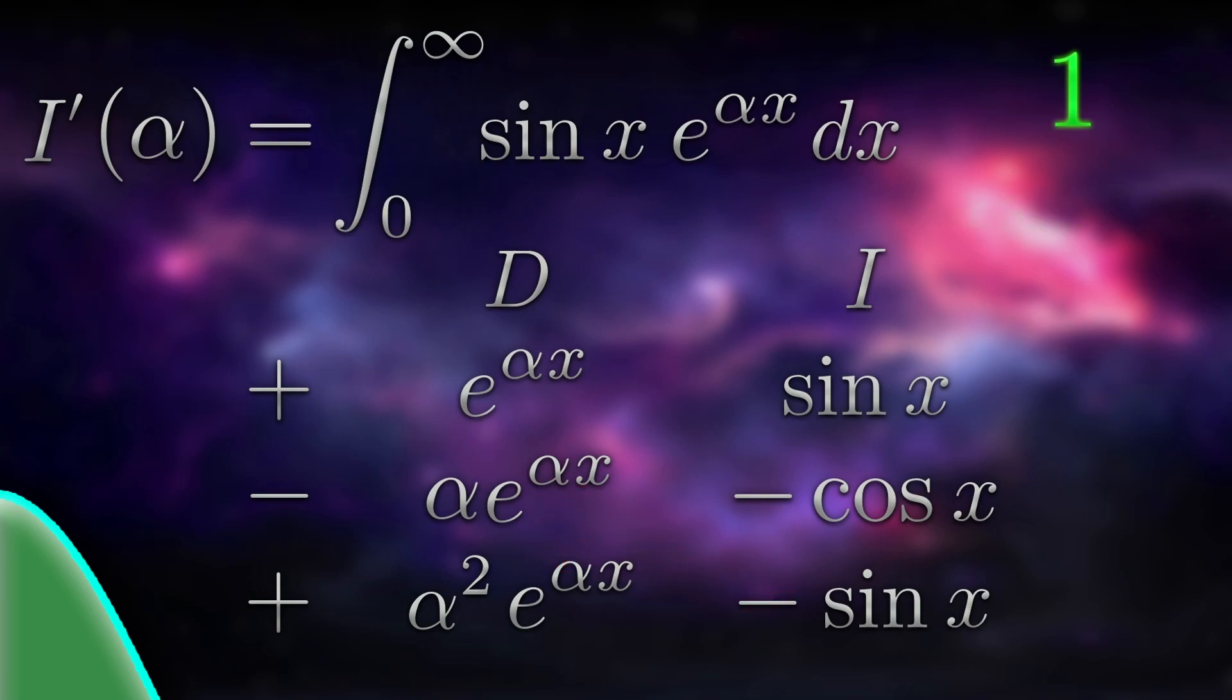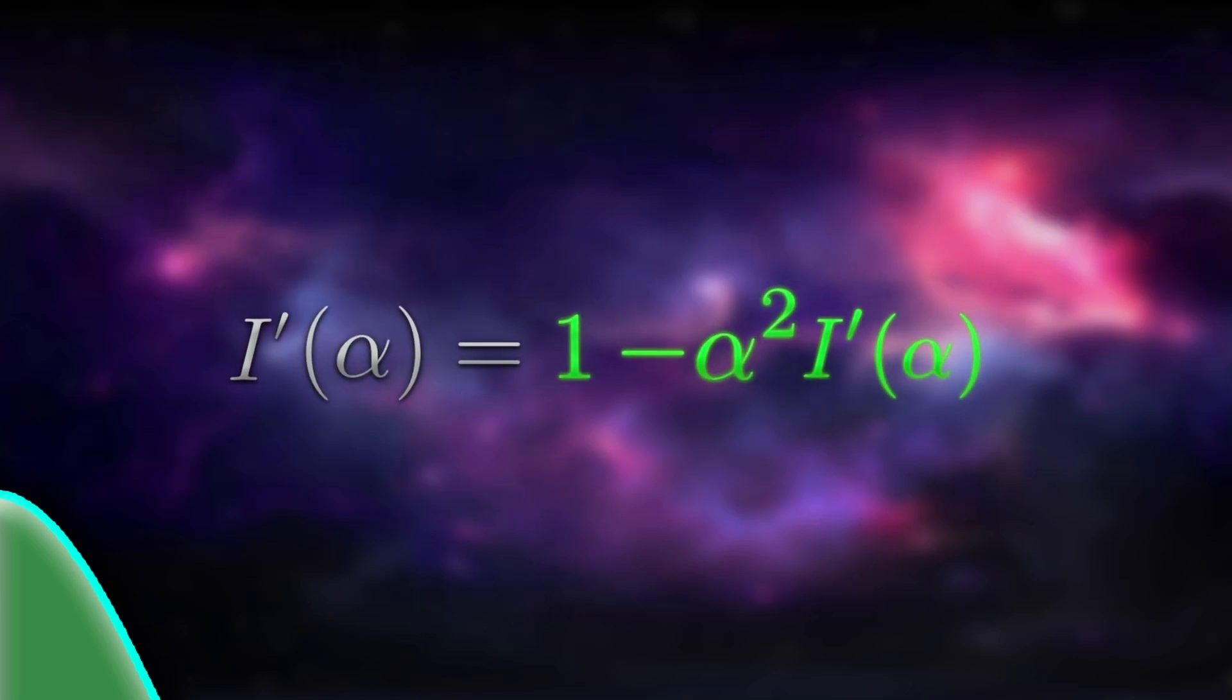Finally, we need the integral of the bottom row. This will be negative alpha squared times the integral from zero to infinity of sin x e to the alpha x dx, which is just negative alpha squared times the thing at the top, or negative alpha squared i prime alpha. Adding these terms together, the integration by parts is now complete.